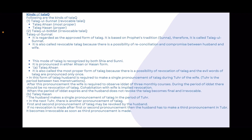In Talak-Ahasan, the husband is required to make a single pronouncement of Talak during the period of tuhr (the purity period between two menstruations). The wife then observes iddat of three monthly courses. During this period, if there is cohabitation, it is implied revocation. If the husband does not revoke the Talak when the iddat period expires, the Talak becomes final and irrevocable.